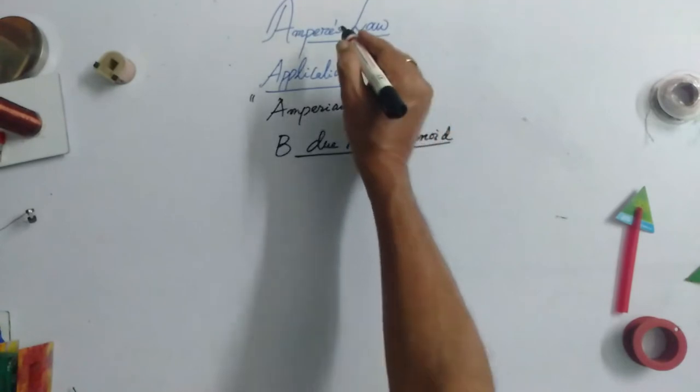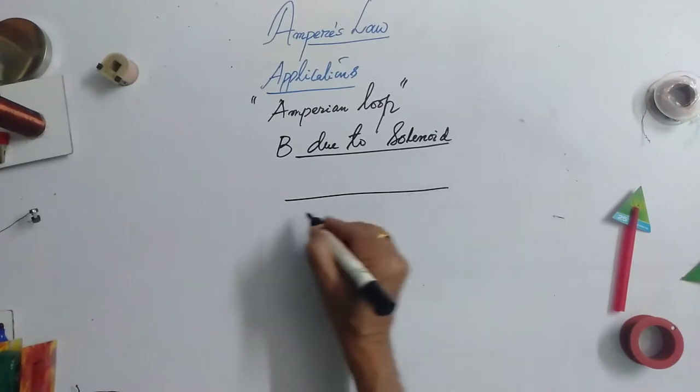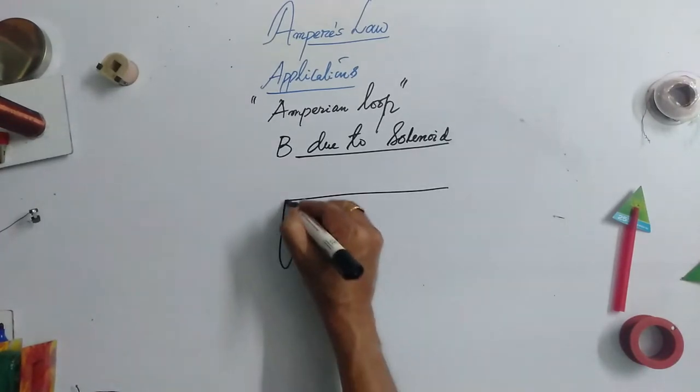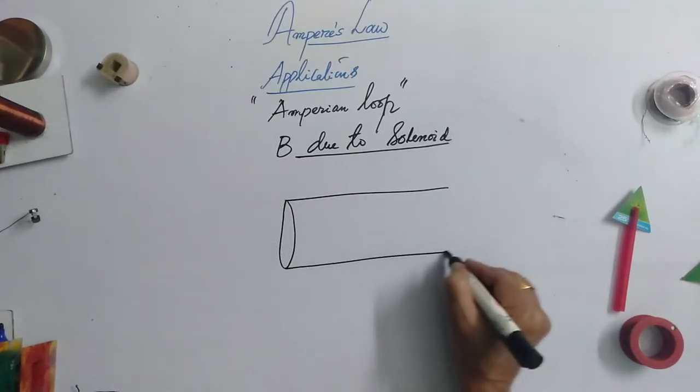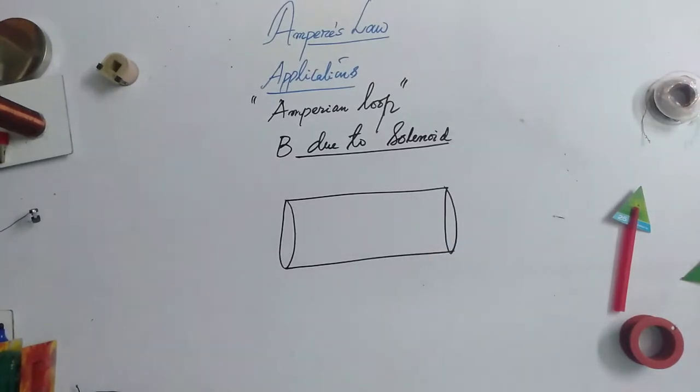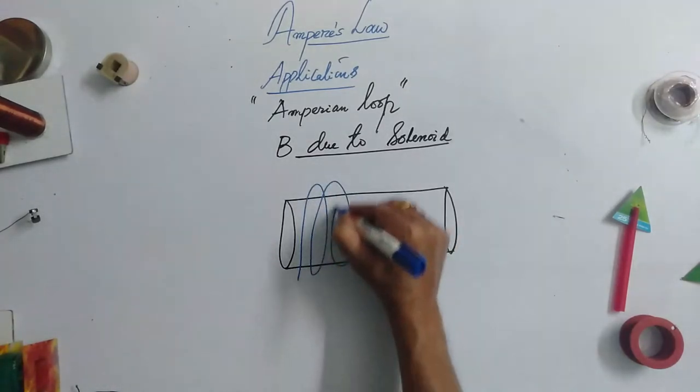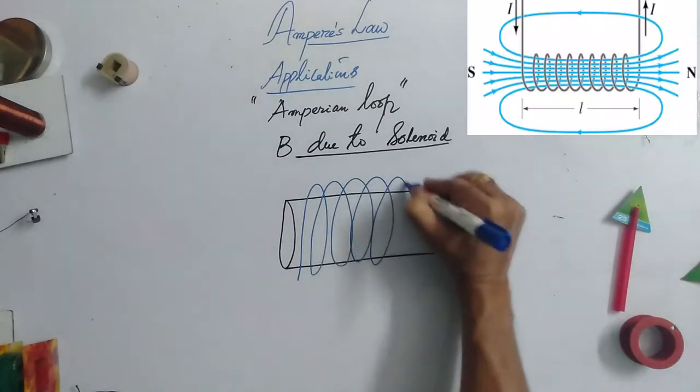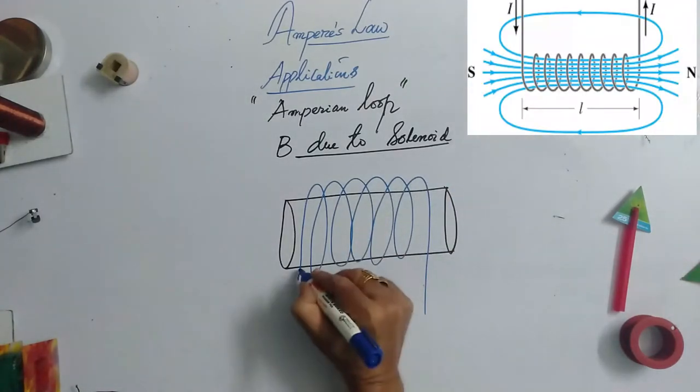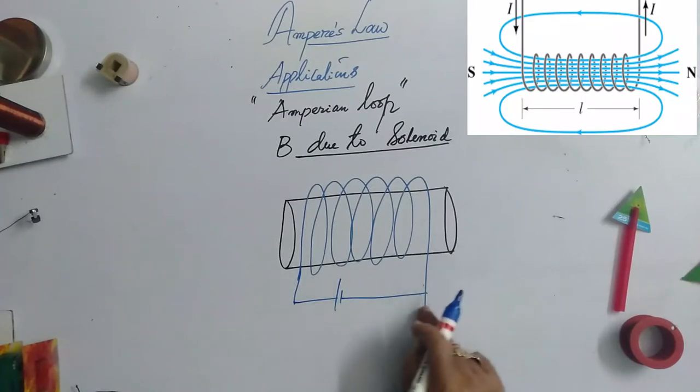B due to solenoid by using Ampere's law. So, we know that it is the solenoid and here you have to connect the power source.